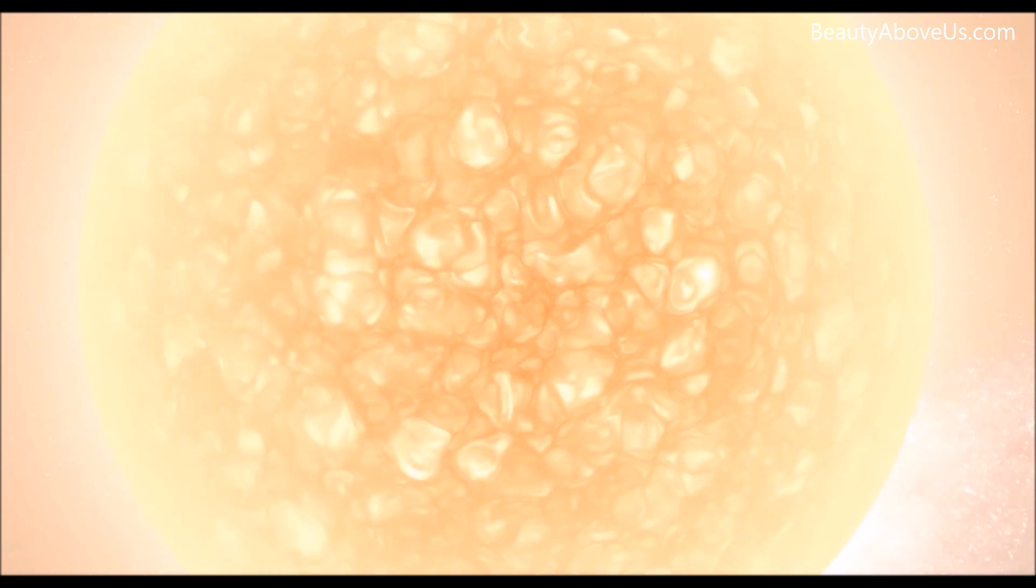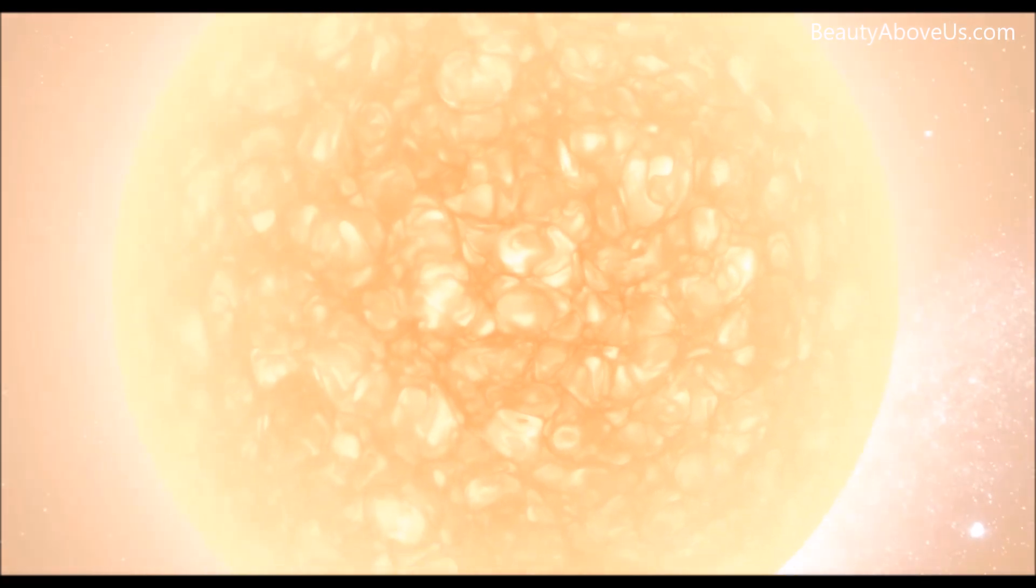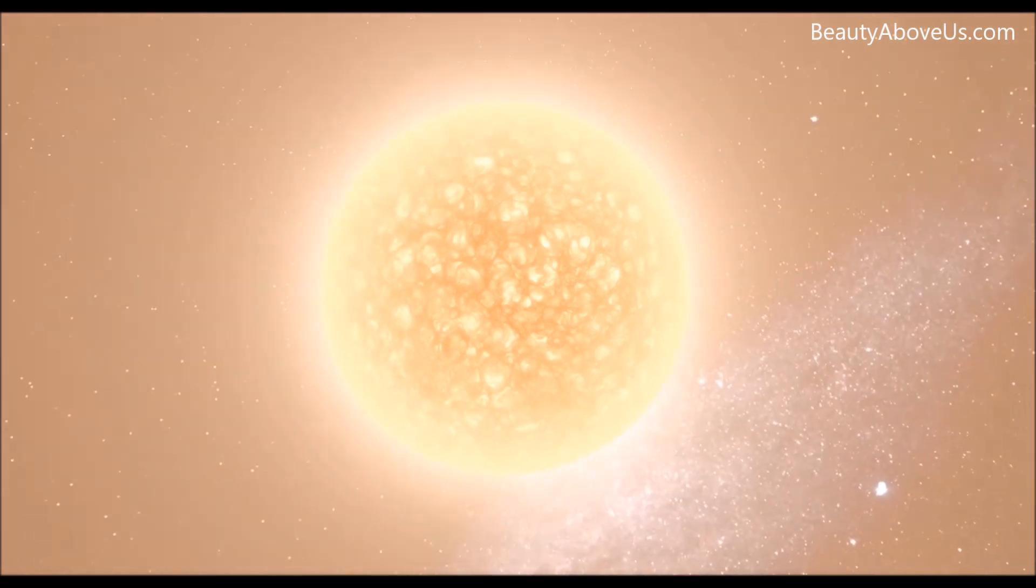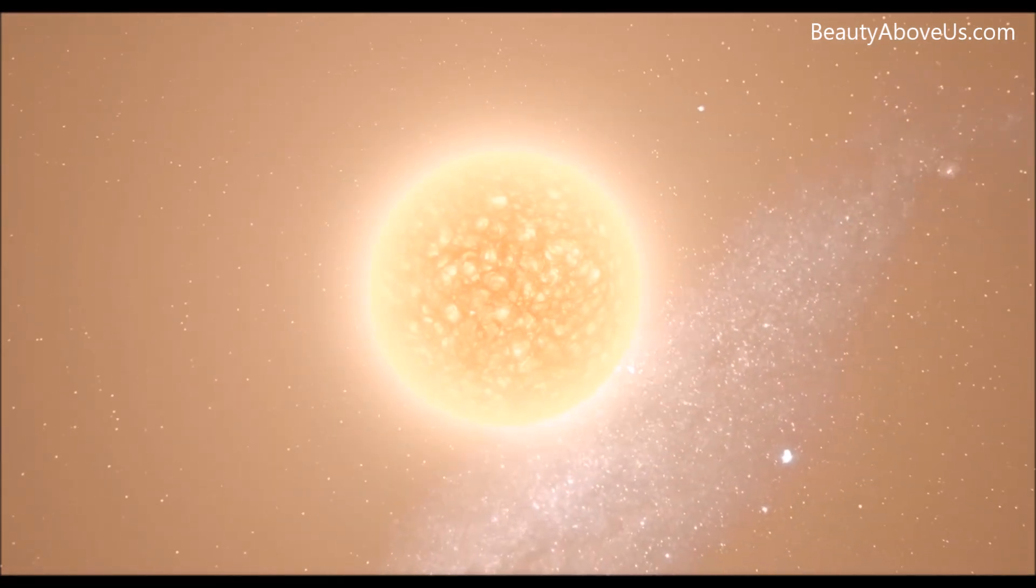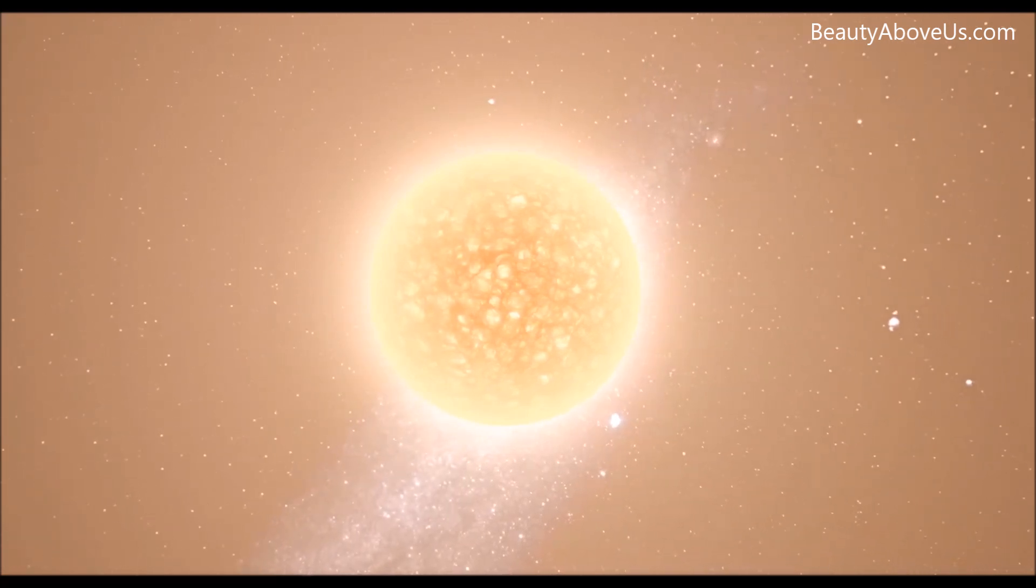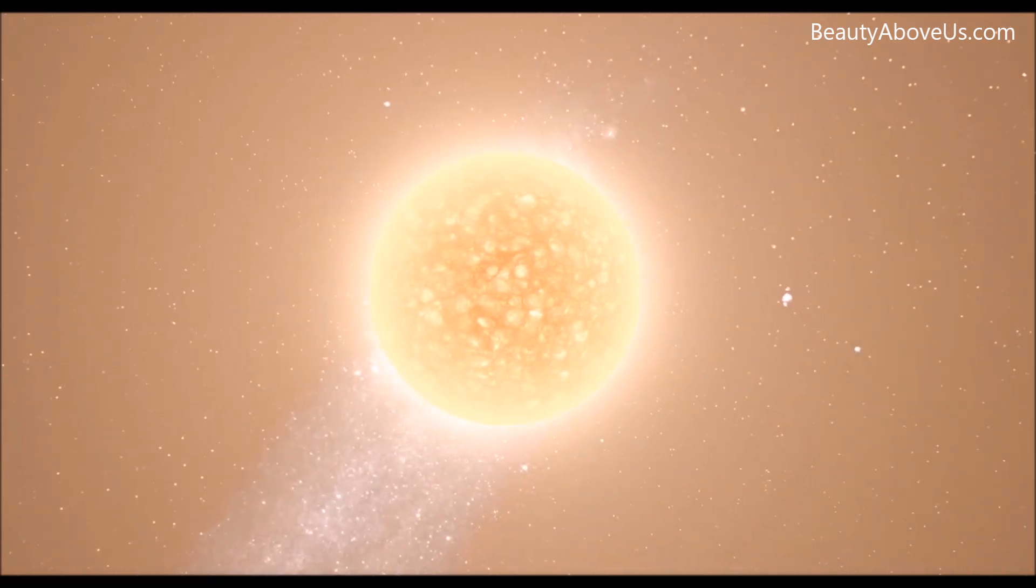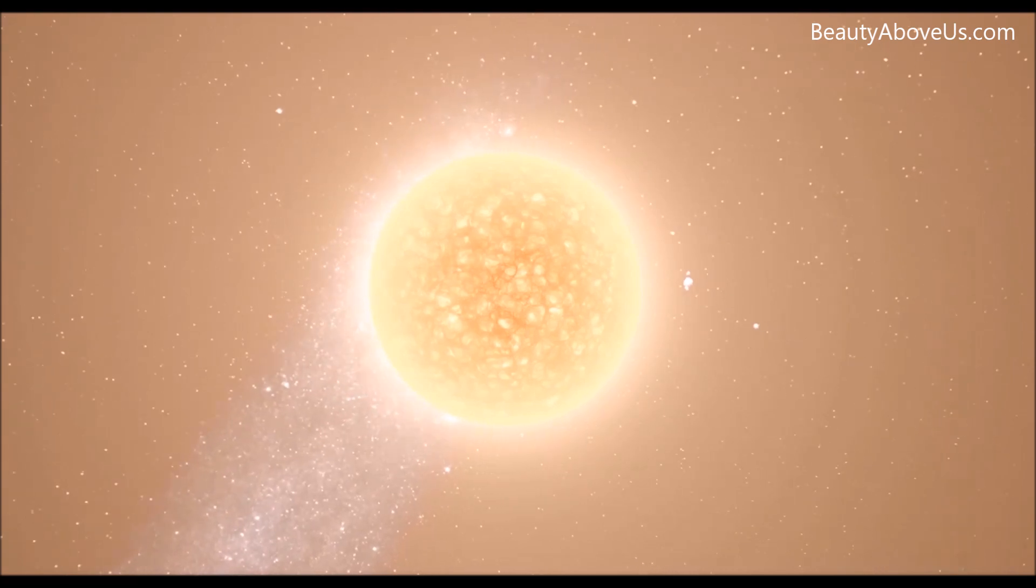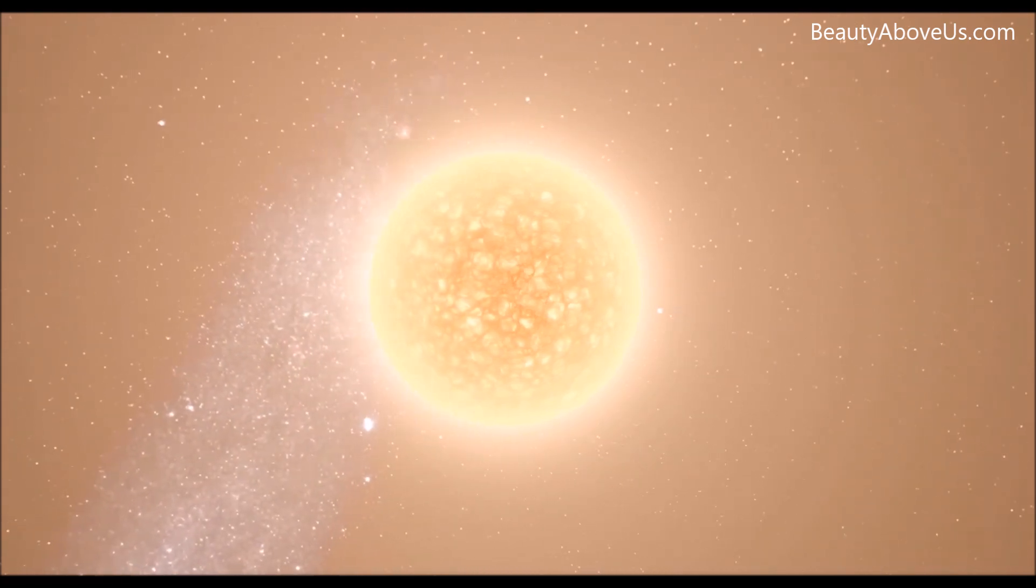Smaller stars do not become red giants. It is because of convective heat transport, their cores cannot become dense enough to generate the heat needed for expansion. Larger stars become red supergiants or hypergiants.